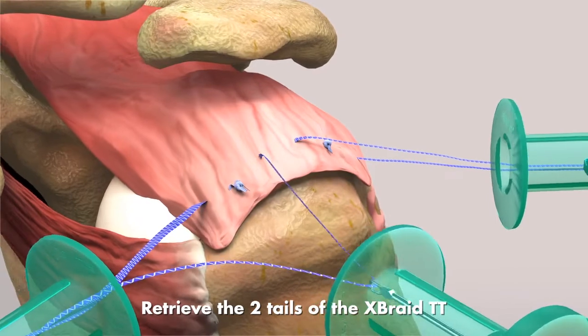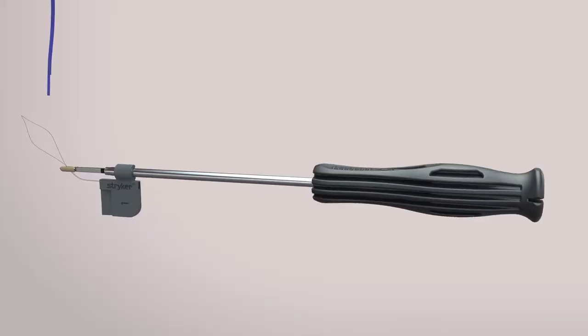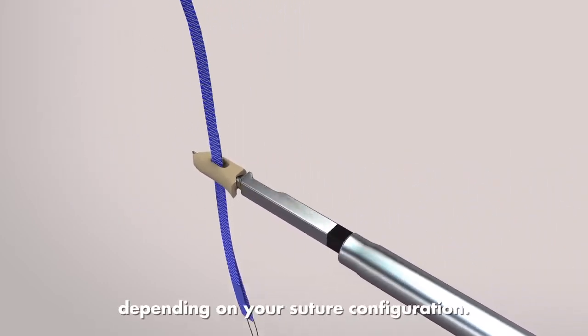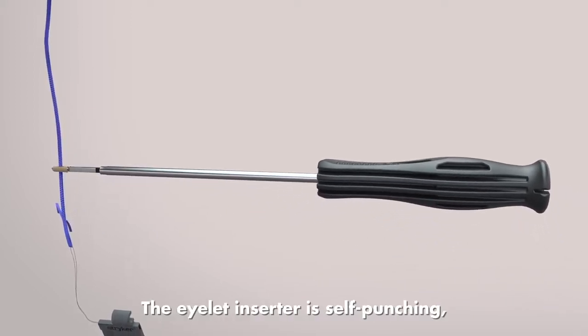Retrieve the two tails of the X-Braid TT into the eyelet using the pull tab. Note, up to eight tails of No. 2 force fiber can be loaded through the eyelet depending on your suture configuration.